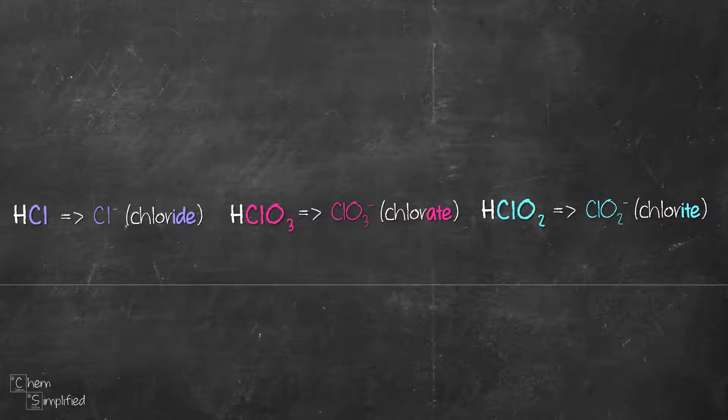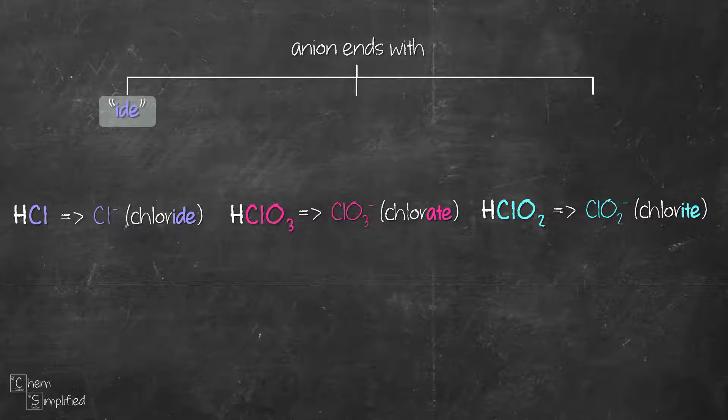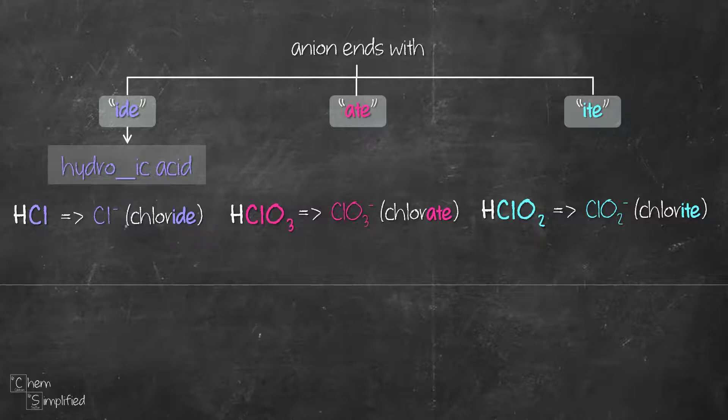Once we know the name of the anion, we'll follow these simple guidelines. If the anion ends with IDE, we'll insert the prefix hydro and suffix IC acid. Prefix refers to the term that comes in front of the name and suffix refers to the term that is added at the end. Therefore, for chloride, we replace the IDE and we add in hydro in front and IC acid at the back. And that gives the name HCl as hydrochloric acid.